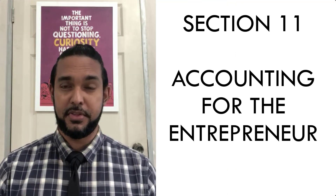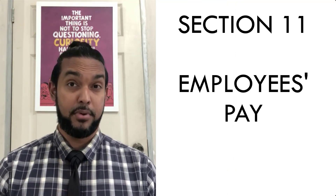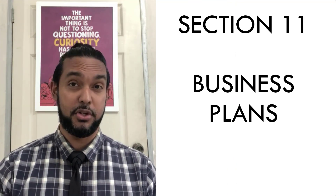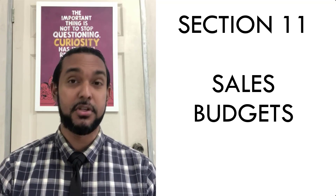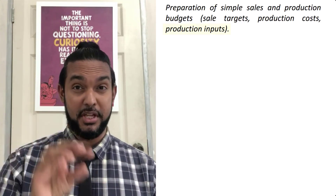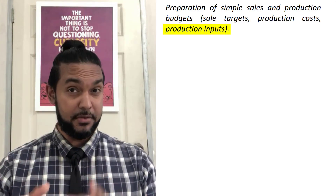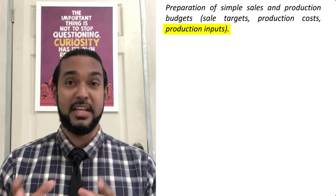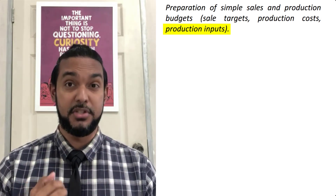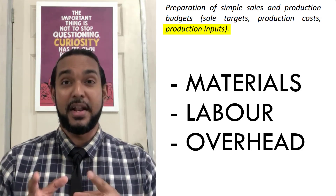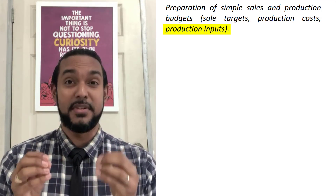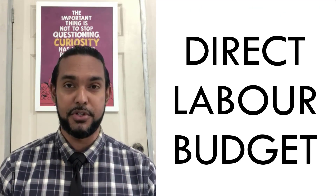In the current iteration of the CSEC POA syllabus, this topic can be found in section 11 along with such other things as employees' pay, preparation of business plans, schedule of cash projections, sales budgets, and production budgets. They don't actually use the words 'direct labour budget' but they have 'production inputs,' and if you're familiar with manufacturing accounts, we know that the inputs to the production process are materials, labour, and overhead. In this video I'm specifically dealing with the direct labour budget.